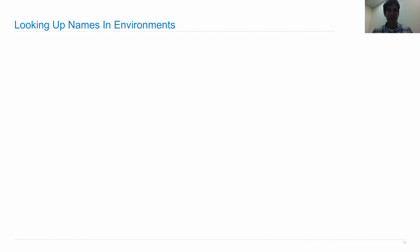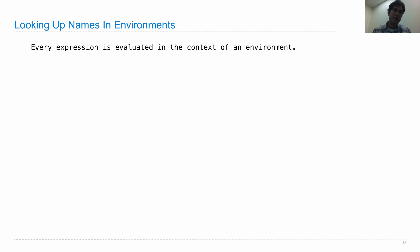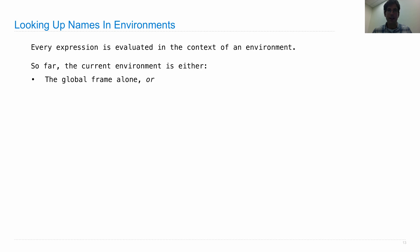We now know most of the story for user-defined functions, but there's one more big piece: looking up names in environments. Every expression we evaluate is evaluated in the context of an environment. Environments are the memory that keeps track of the correspondence between names and values — the environment knows what names mean. The current environment is either just one global frame, or now that we have user-defined functions, it could be a local frame followed by the global frame.